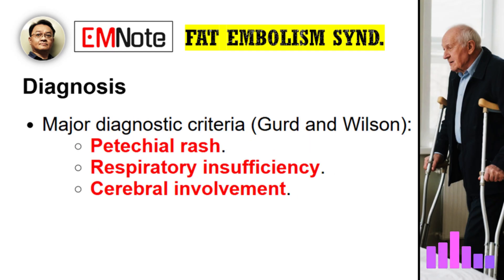Diagnosis relies heavily on clinical findings, often using the Gurd and Wilson criteria. There are three major criteria. First, a petechial rash — tiny, non-blanching, reddish-purple spots often on the head, neck, chest, axilla, and conjunctiva, caused by capillary blockage and bleeding. Second, respiratory insufficiency: shortness of breath, rapid breathing, rapid heart rate, low oxygen levels — the lungs are often hit first and hardest. Third, cerebral involvement in patients without a direct head injury, ranging from agitation or confusion to seizures or coma. If there's no head trauma to explain it, FES is a strong suspect.